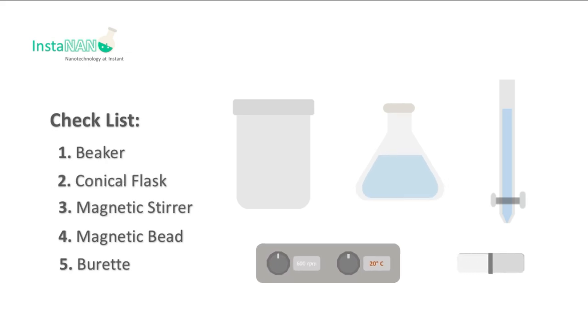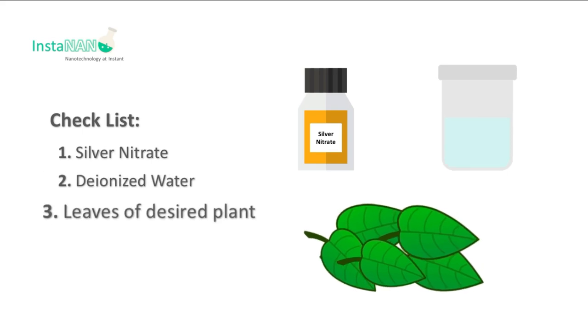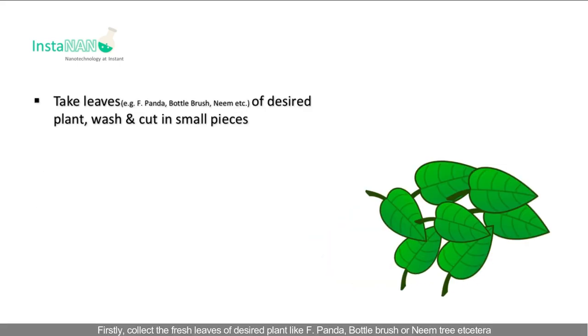magnetic stirrer, magnetic bead, and burette. Chemical checklist includes silver nitrate, deionized water, and leaves of desired plant.